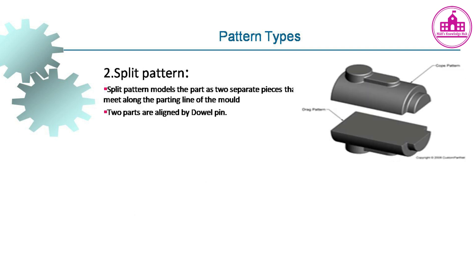Pattern Type 2 - Split pattern: The split pattern models the part as two separate pieces that meet along the parting line of the mold. The two parts are aligned by a dowel pin.